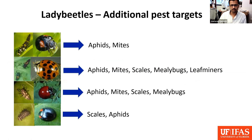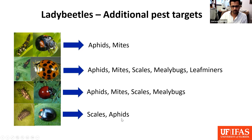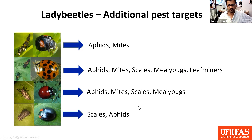Most of these predators are generalists — they are not only attacking the Asian citrus psyllid, but also a wide range of other insects available in citrus groves or other habitats. These lady beetles — you see their adult stages and their larval stages right next to them — attack aphids, mites, scales, mealybugs, leafminers, and a wide range of other pests.